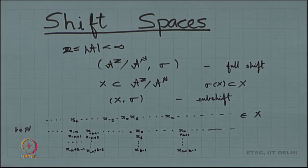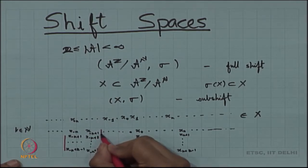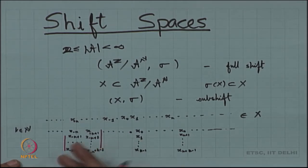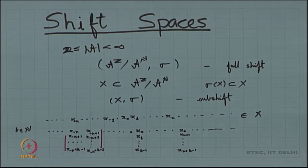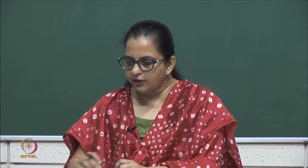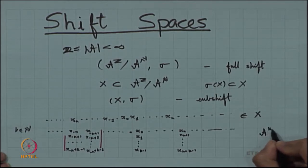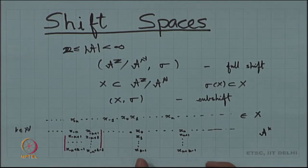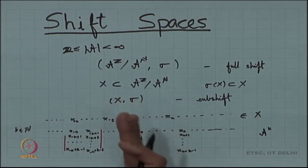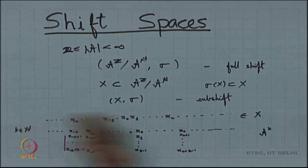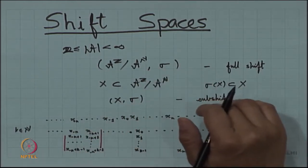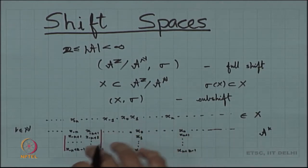This infinite sequence is admissible if consecutive blocks agree on their overlapping part — if these two blocks agree, then we are writing the same shift in terms of a higher block. All these blocks can be thought of as alphabets, so the new alphabets are in A^k. The shift is doing nothing but shifting one position to the right. This is a higher block version of the shift, and the same sub-shift can be expressed in this particular form, which is helpful in many ways.